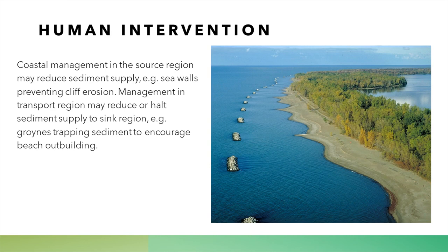When exploring sediment cells, it's extremely important to consider the human impact. For people trying to manage a coast, they must consider sediment cells, because in too many instances people tend to build sea defences — like a seawall, riprap, or revetment — in an area that is a source of erosion and sediment. When you do this, you starve other areas of the coast from sediment. Blocking erosion reduces the amount of deposition and transportation further down the coast, potentially exacerbating problems there and costing more money than necessary.